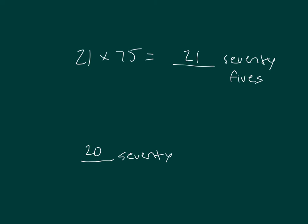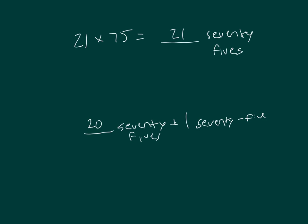Should be thinking how we can break this apart using easier numbers to work with. That would be 20 75s plus one more 75. If that's the case then, in working that out,